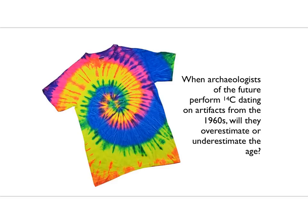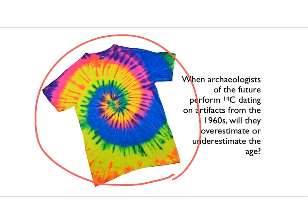Here's a question: suppose an archaeologist of the future unearthed a tie-dyed t-shirt from the 1960s and does carbon-14 dating on it. Think about everything we've talked about. Will they overestimate or will they underestimate the age? Think about how that relates to everything we talked about — the duck and cover, Tales of the Atomic Age — and then ask yourself: will they overestimate or underestimate the age? Reason about this; remind yourself of the details from last Friday.